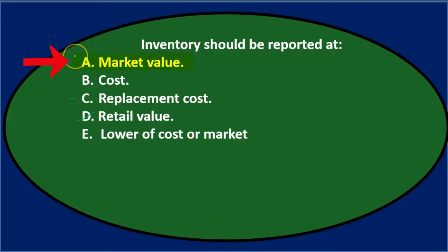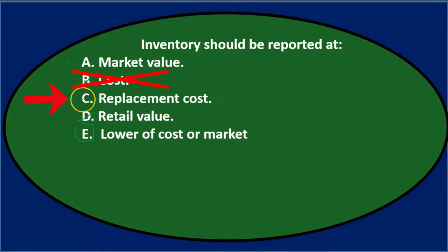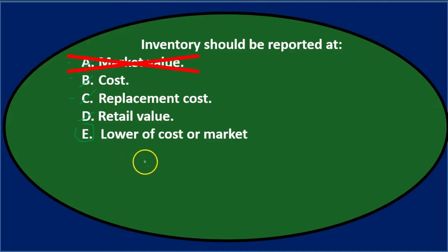Inventory should be reported at — reviewing the remaining options: A market value, B cost, C replacement cost, or E lower of cost or market. The rule is lower of cost or market. We do initially record inventory at cost, but if the market value or replacement cost falls below that, we use the lower figure. Market value alone isn't the answer unless it drops below cost. So the answer is E, lower of cost or market.